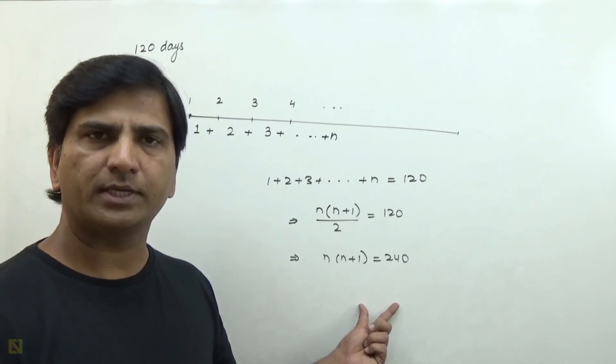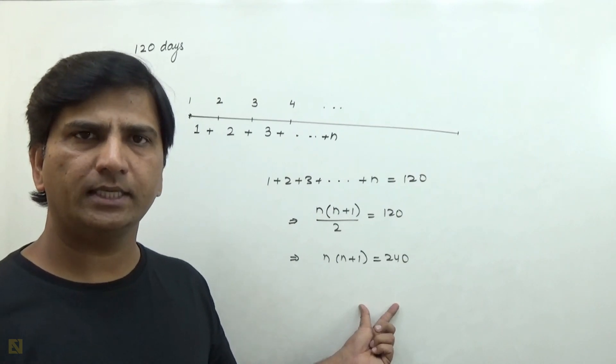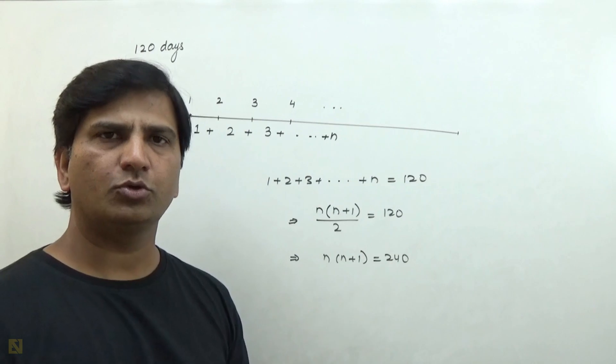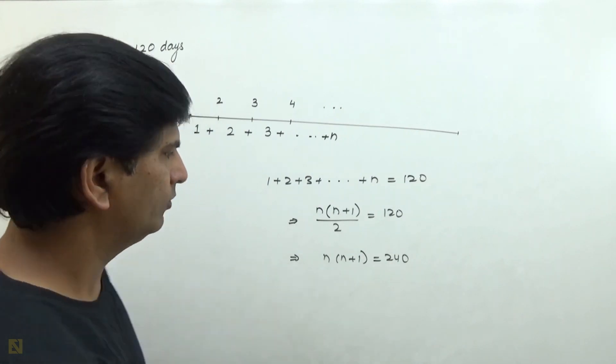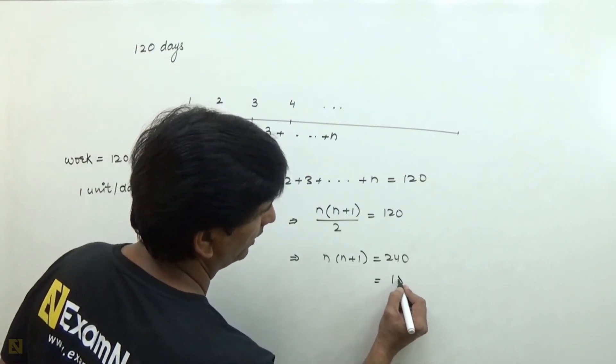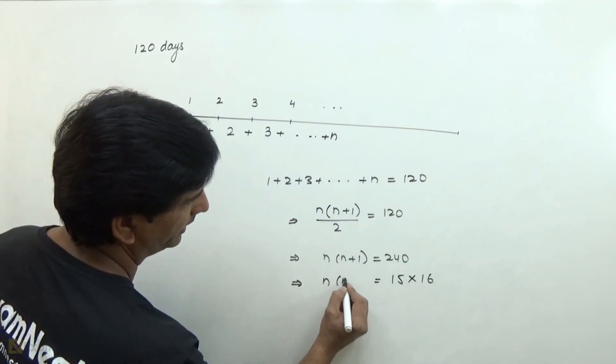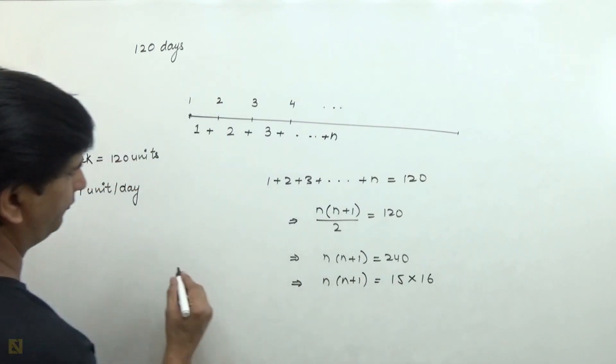After this, you can either form a quadratic equation and factorize it to get the values, or here you can find 2 factors of 240 that are consecutive numbers, and we can see those are 15 and 16. Comparing this, the value of n will be 15.